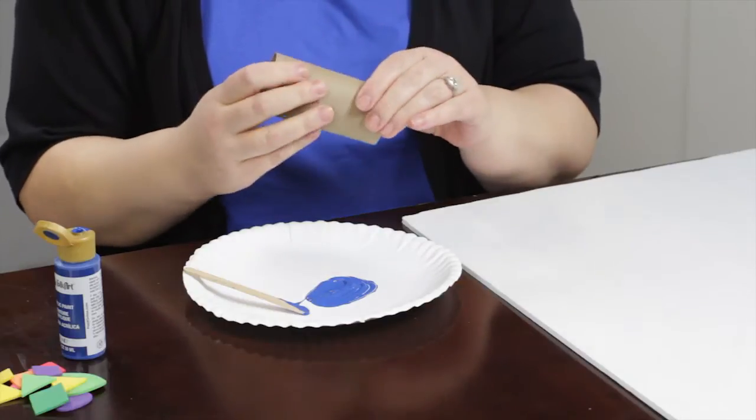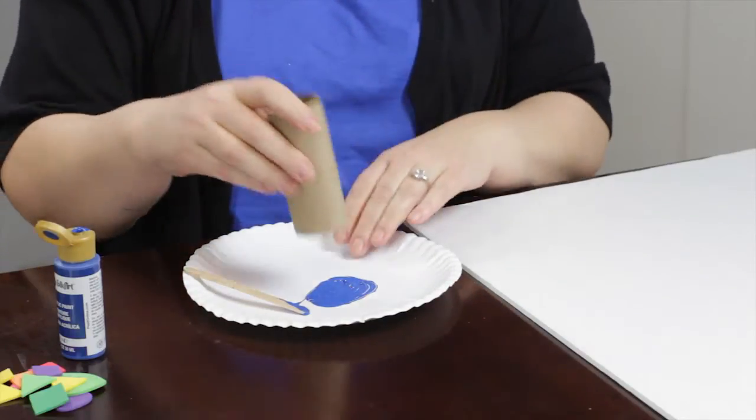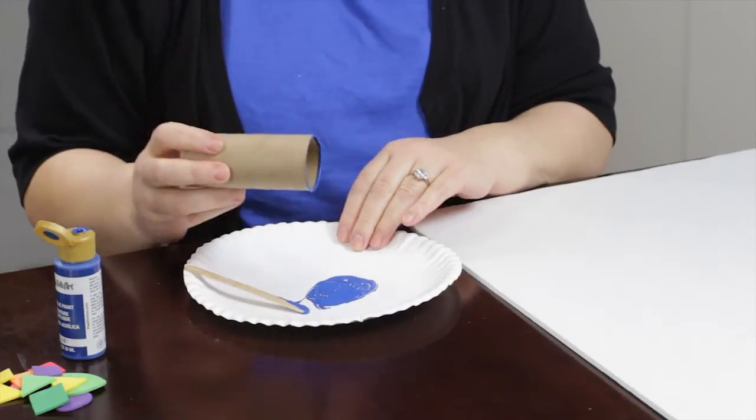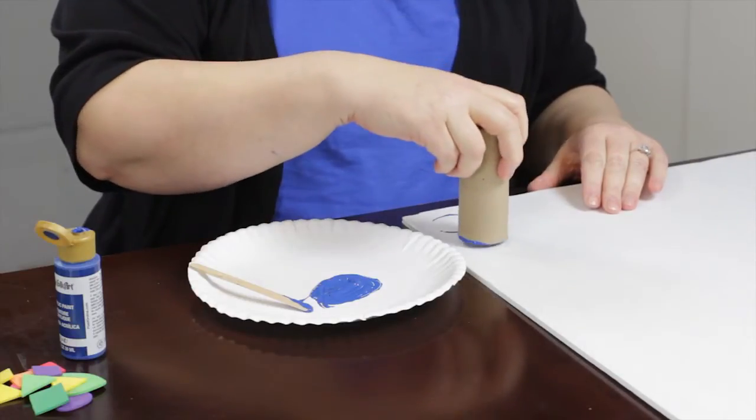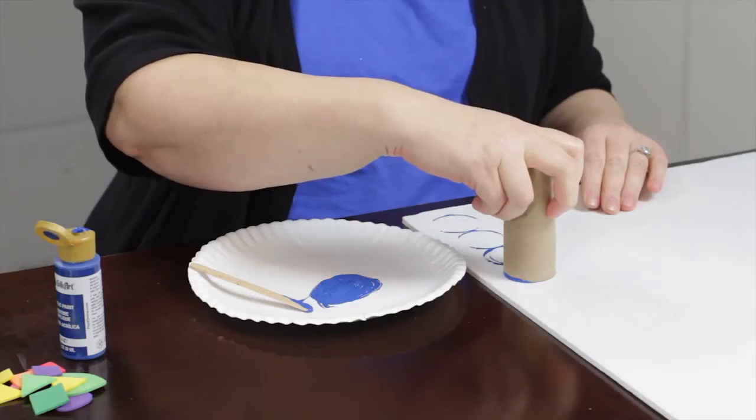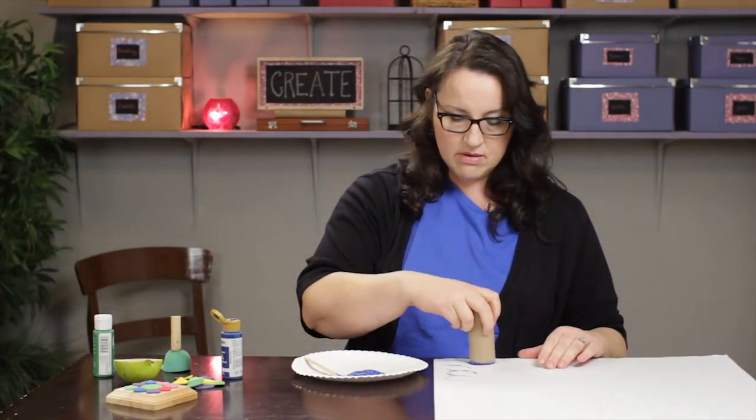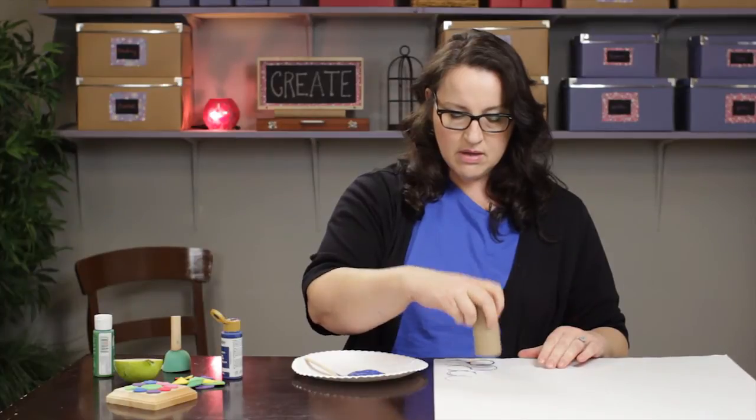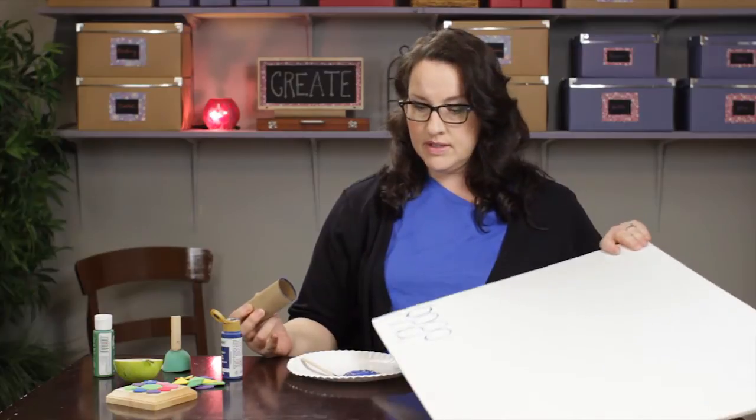Now if you want to do something like you were covering an area of your wall or something like that and you wanted to make circles, you can just dip that in there and repeat it in a pattern and use that as a stamp.